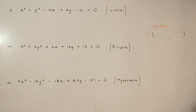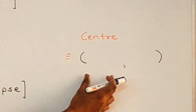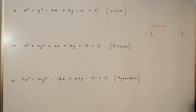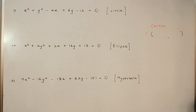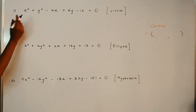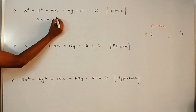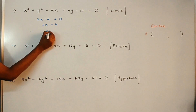All right, guys — so here we have the general equations of circle, ellipse, and hyperbola on the board. To find the center, we need an x-coordinate and a y-coordinate, and we have the same technique for all three. For the circle, to find the x-coordinate, differentiate all the x-terms with respect to x and equate to 0. So x² derivative is 2x, and −4x derivative is −4. Equating to 0: 2x = 4, so x = 2.